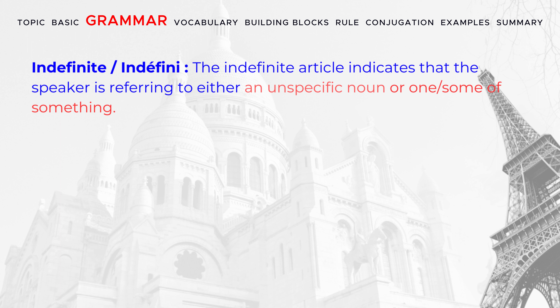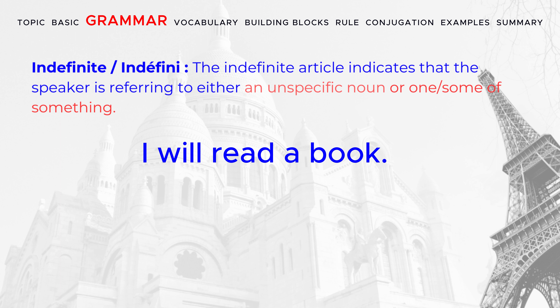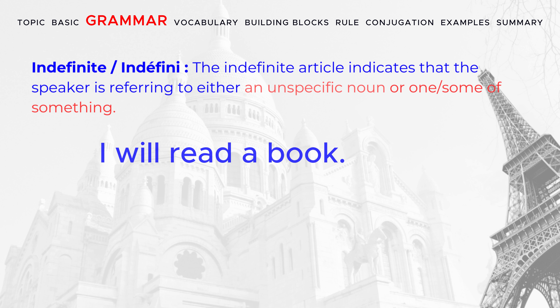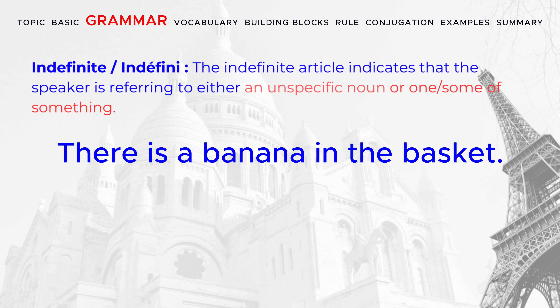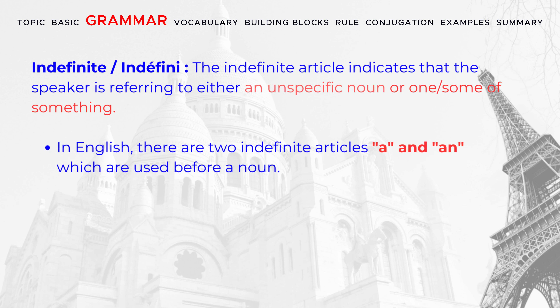For example, 'I will read a book' — here I am not talking about any specific book. Similarly, if I say 'there is a banana in the basket,' I am not specifying a particular banana. In English, there are two indefinite articles, 'a' and 'an,' which are used before a noun.